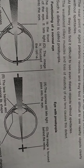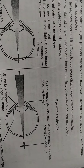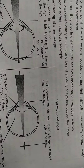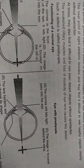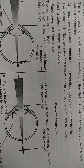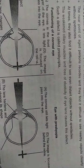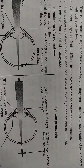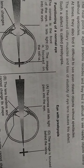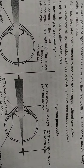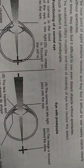At times, aged persons also find it difficult to see even distant objects without spectacles. So whether the object is nearby or far away, they will find difficulty seeing it clearly without spectacles. The reason is that in old age, the ciliary muscles weaken.